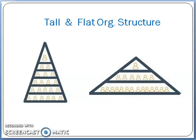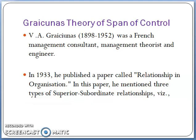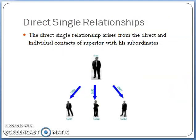When we talk about span of management, Graicunas is an important person. He is a French management consultant and management theorist. He has given an important theory called the theory of span of control. This theory was published in a research paper called 'Relationships in Organization' in 1933. In this paper, he has mentioned three types of superior and subordinate relationships.